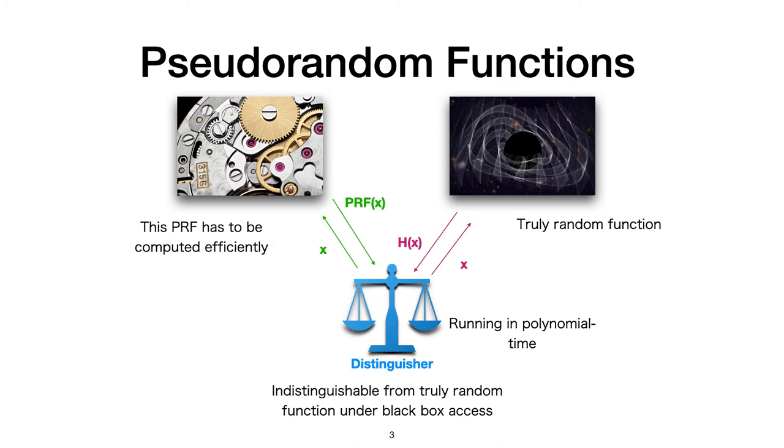So basically, a pseudorandom function, or PRF, is a seemingly random function, which means for a distinguisher running in polynomial time, it looks the same as the truly random function under black box access. In other words, this pseudorandom function and the truly random function are indistinguishable for the efficient adversary.